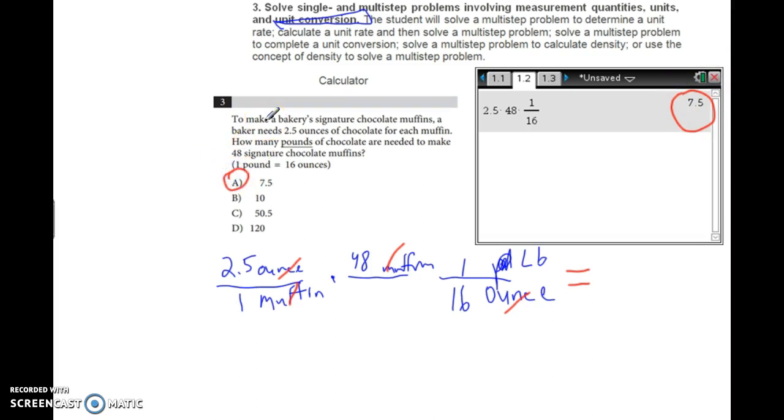Students usually do pretty well on those questions. Just keep your work organized, and you should be able to do unit conversions. Be prepared—on the SAT, you may have to convert 3, 4, or 5 times, sometimes in the same problem. It's not always just one conversion like pounds to ounces. It could be more.